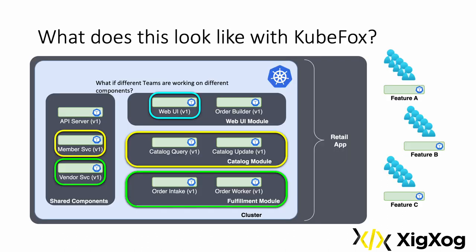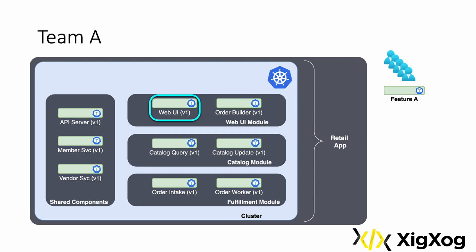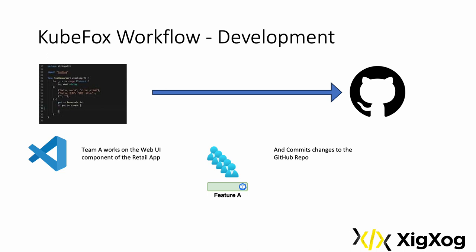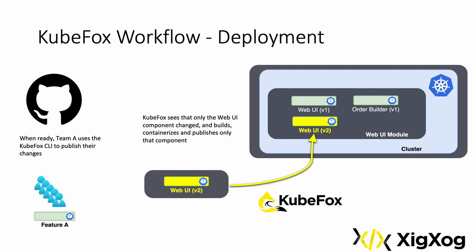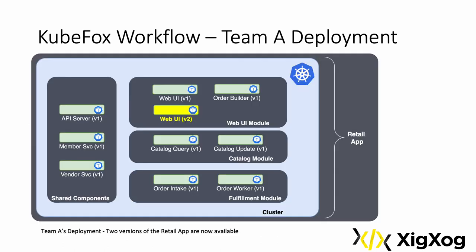Let's take a look at how teams would function in a KubeFox world. Team A is working on a single component, the web UI. When Team A is done, they commit their changes to the repo. When ready, Team A publishes the application. KubeFox looks at the repo, determines that only the web UI changed, and containerizes and deploys only the new version of the web UI to the cluster. Team A is publishing the application — not the component. KubeFox is the one that figures out what changed. After Team A deploys, two versions of the retail app are available: the original version and the updated version that uses version 2 of the web UI. It's that simple.